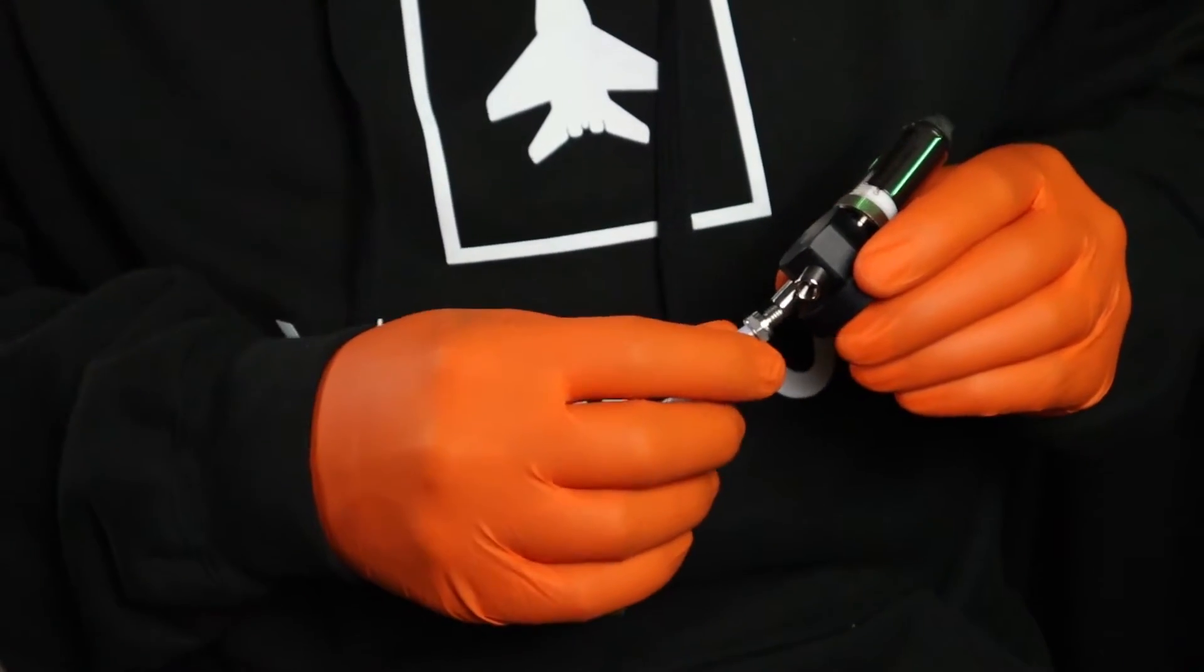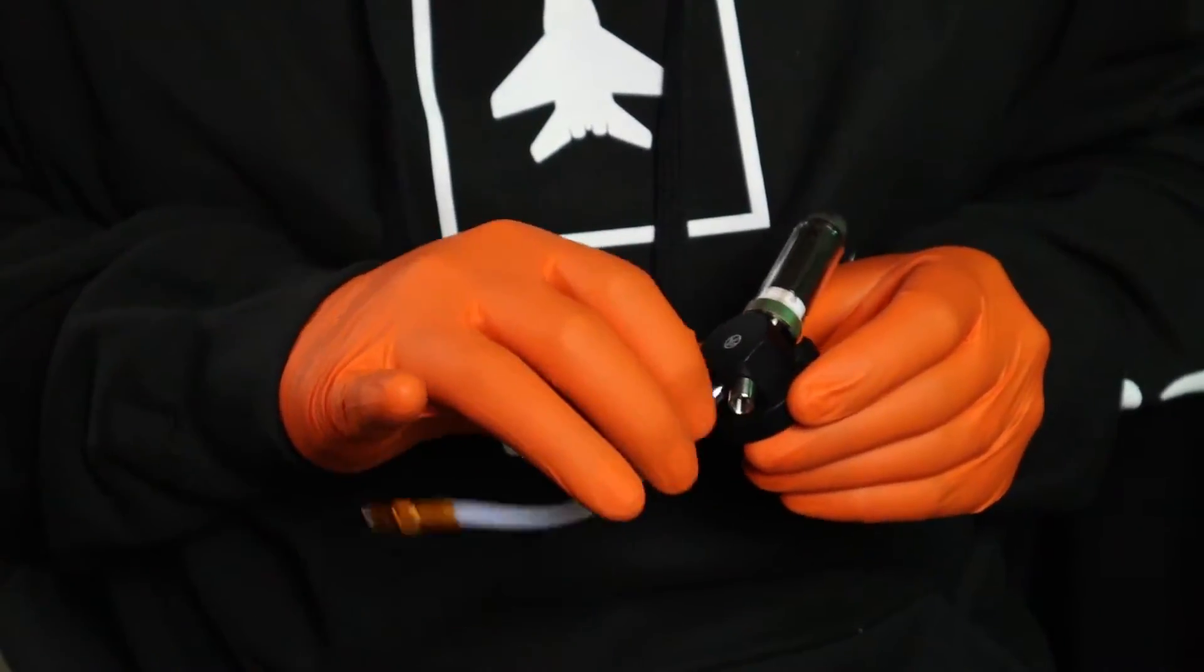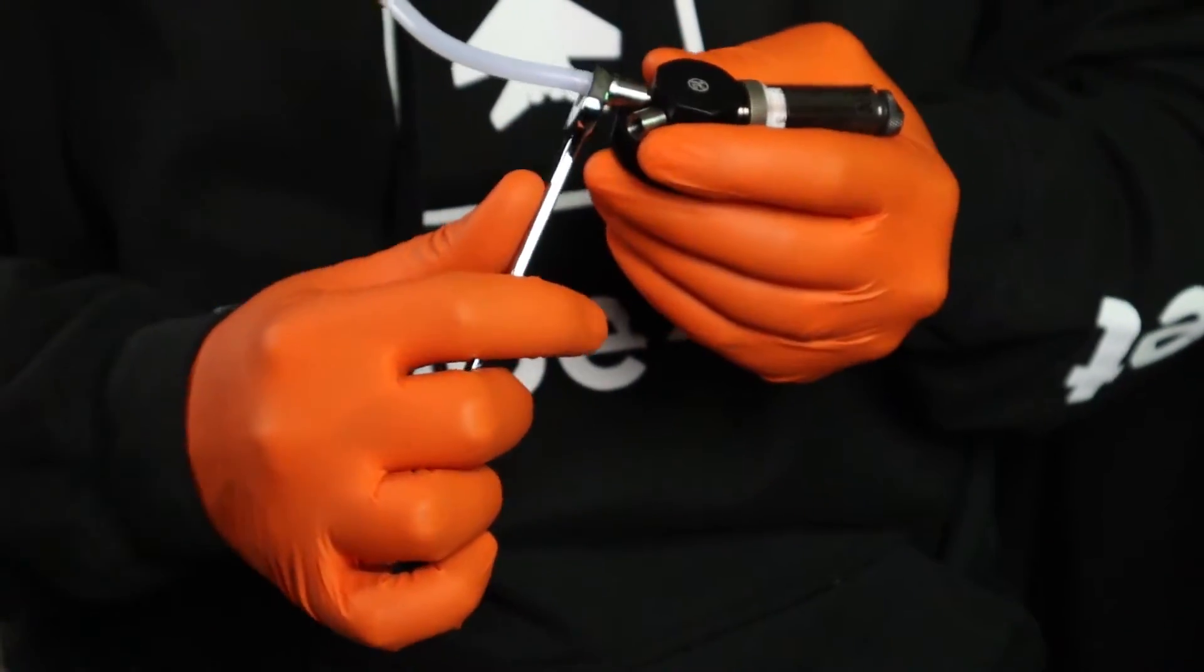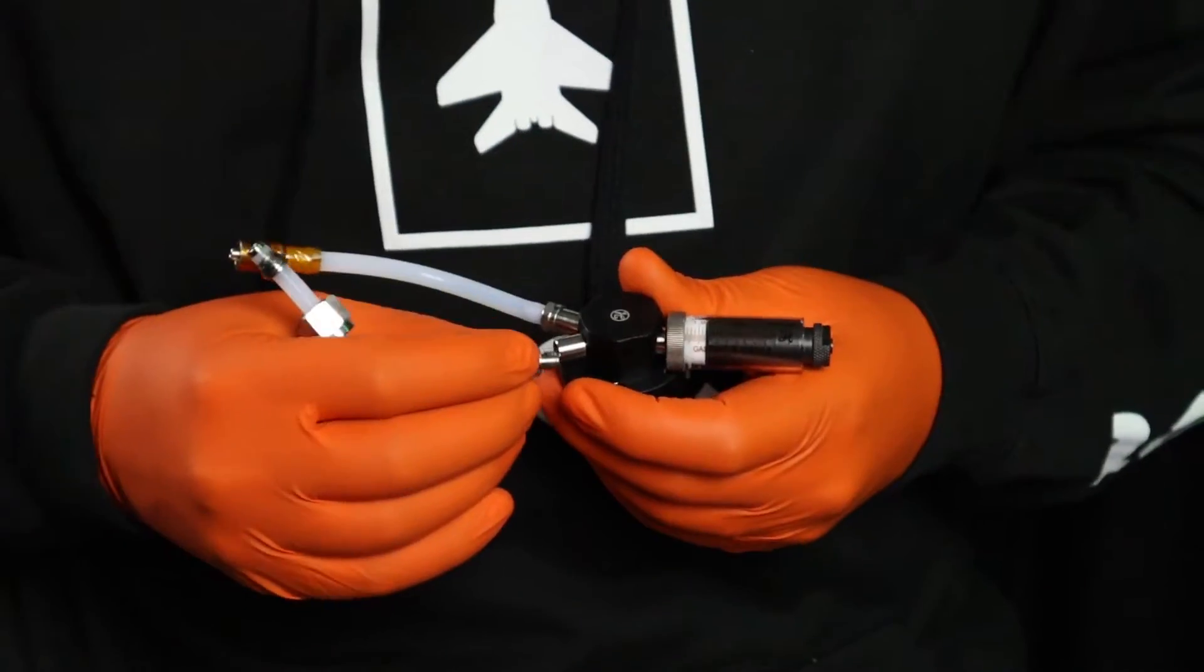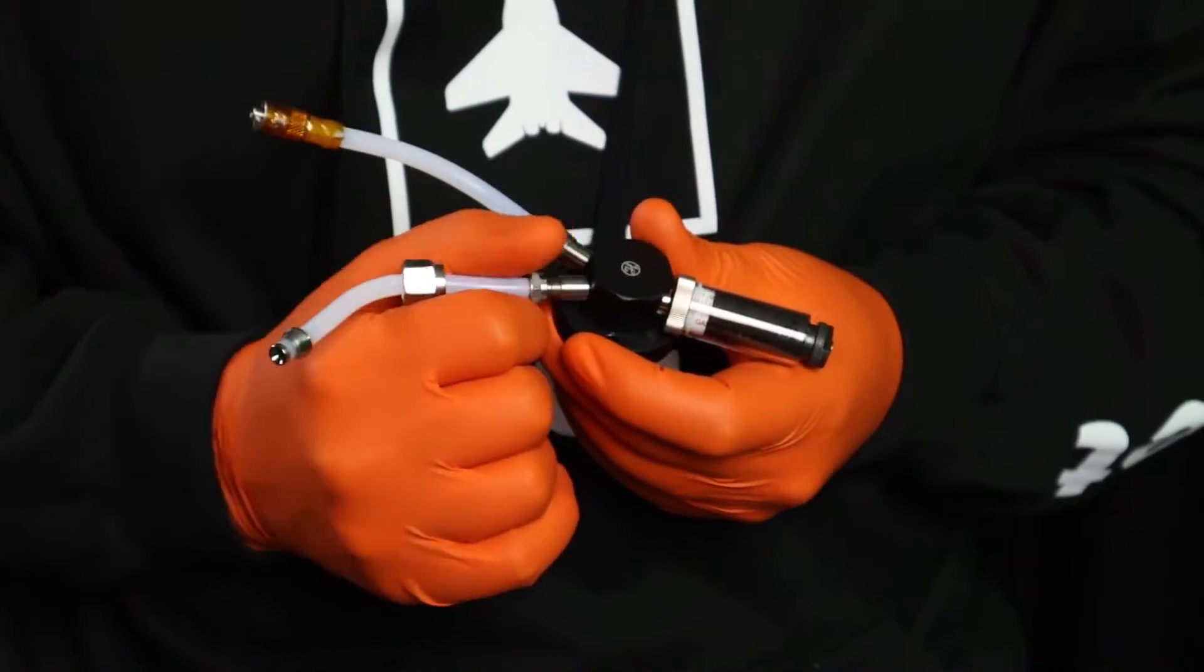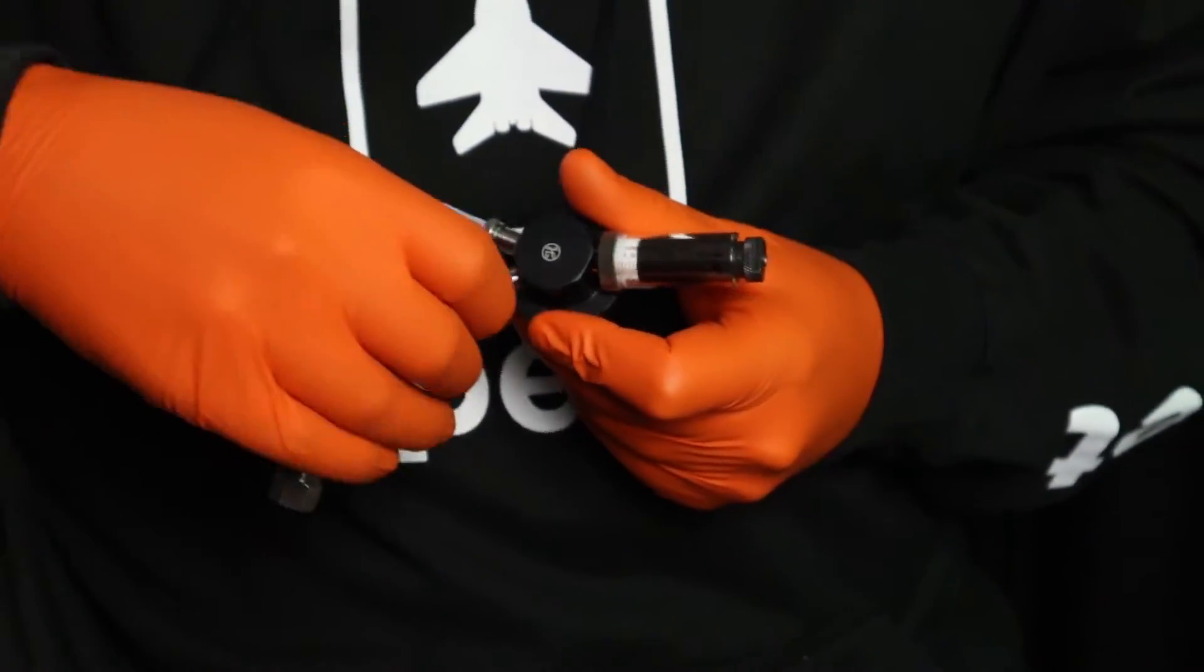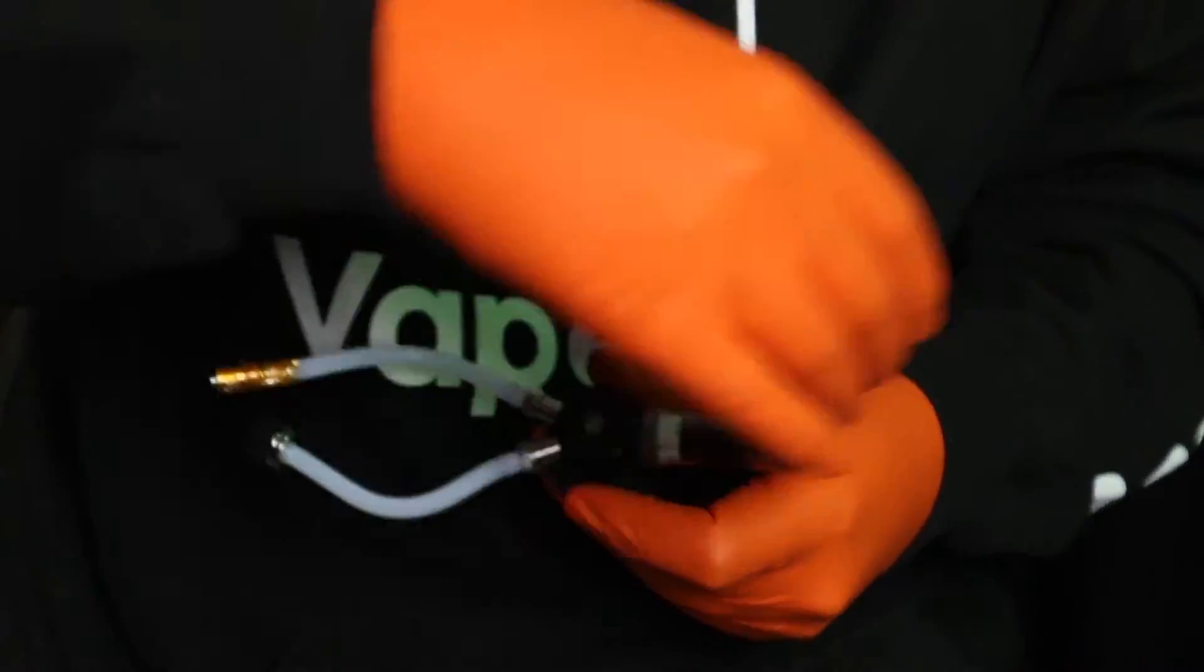Attach the needle PTFE assembly to the lower port of the valve body, finger tight, then fully tighten with a 10 millimeter wrench until the O-ring in the threaded adapter begins to bulge slightly. Next, attach the reservoir PTFE assembly to the upper port of the valve body, finger tight, then fully tighten with a 10 millimeter wrench until the O-ring in the threaded adapter begins to bulge slightly.